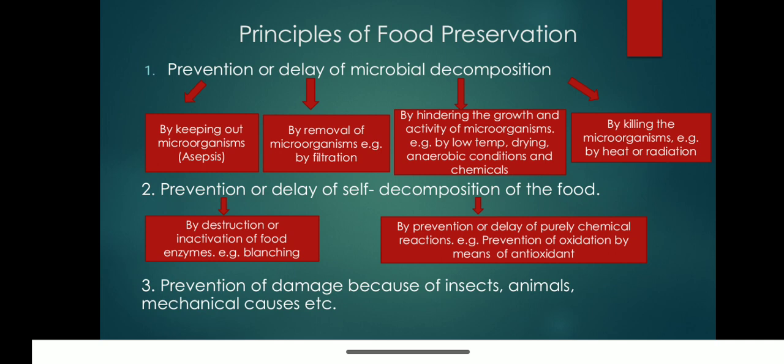The second principle of food preservation is prevention or delay of self-decomposition of the food. This involves two methods: one is destruction or inactivation of food enzymes by using methods like blanching, and the second is prevention or delay of purely chemical reactions, such as prevention of oxidation by means of using an antioxidant.